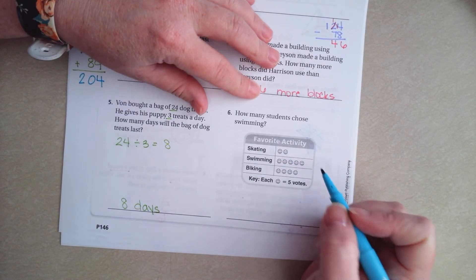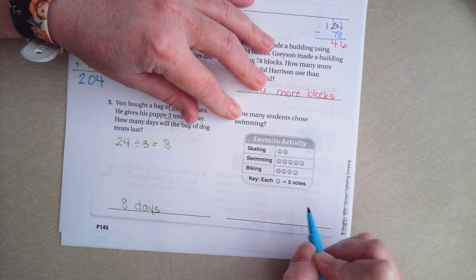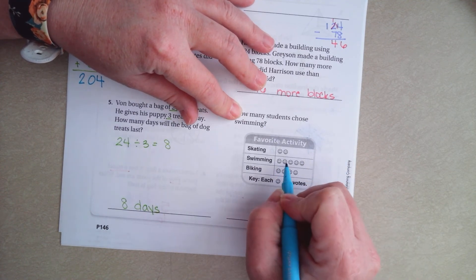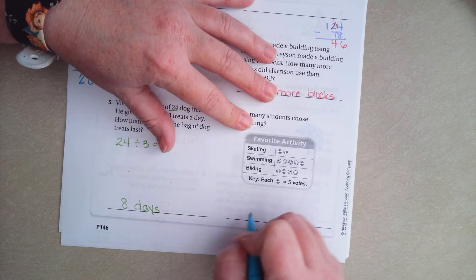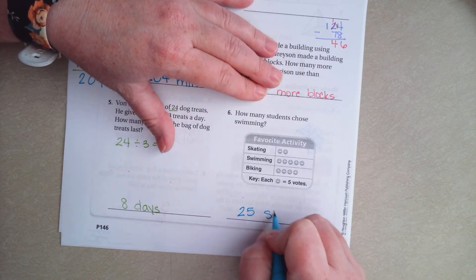How many students chose swimming? Each one of the smiley faces is 5 votes. So, we're going to be counting by 5. So, 5, 10, 15, 20, 25. 25 students.